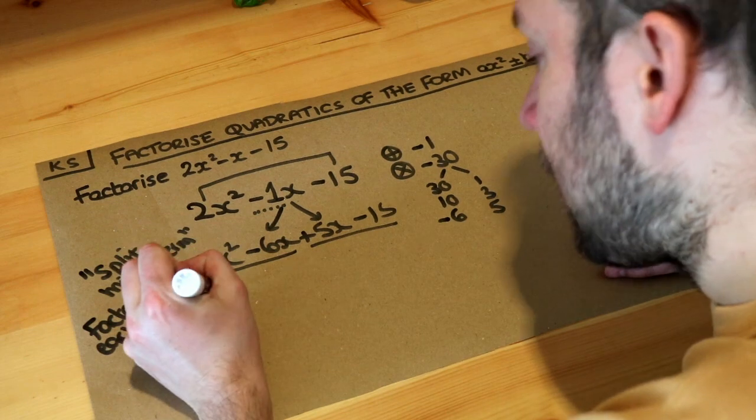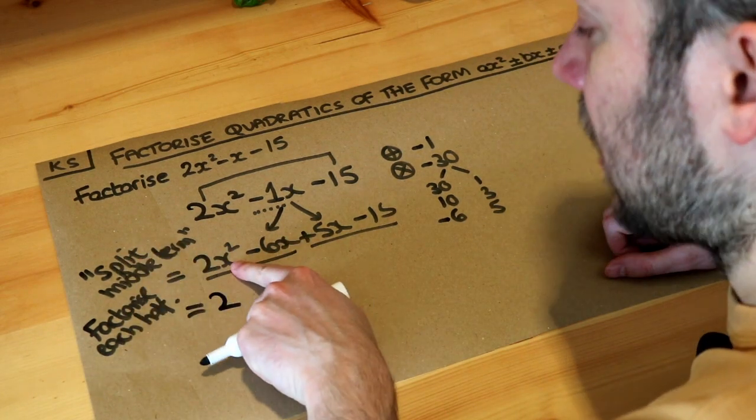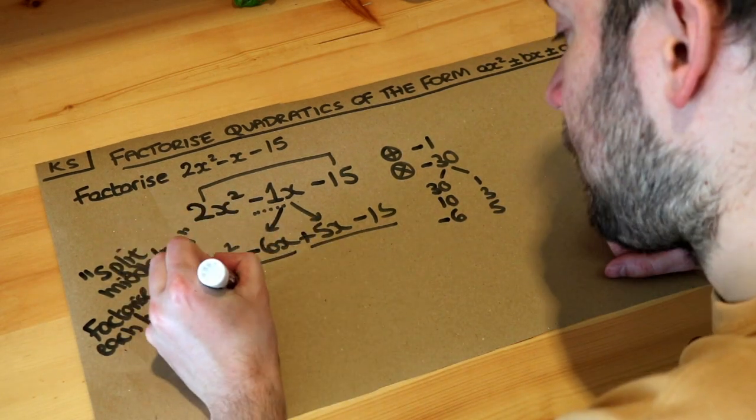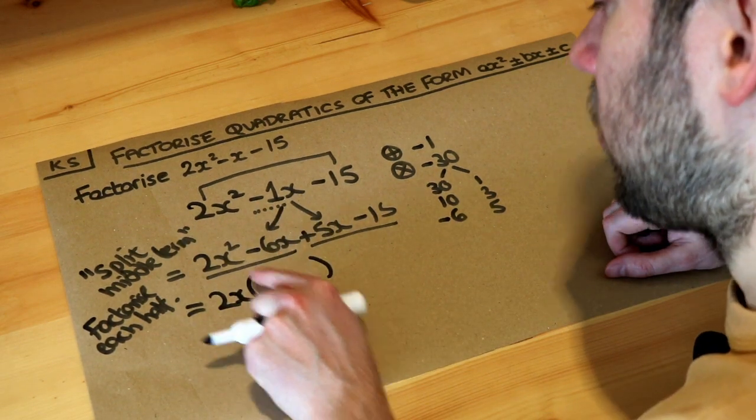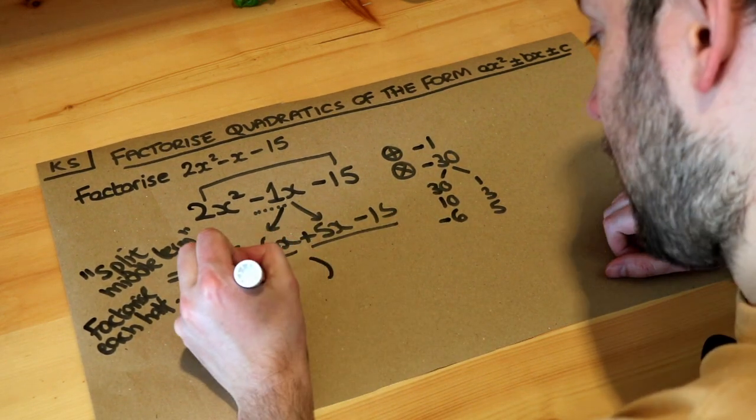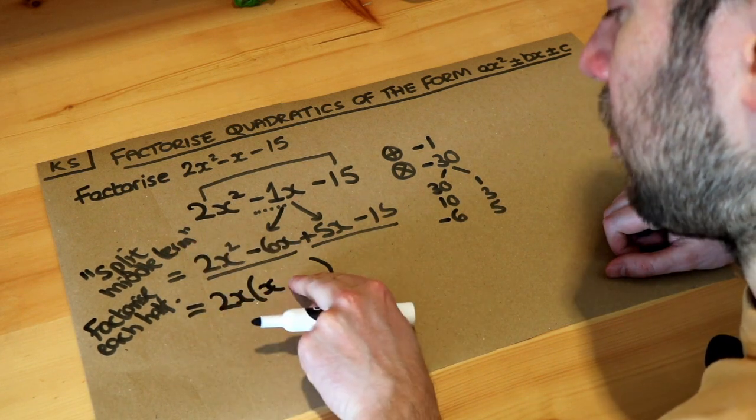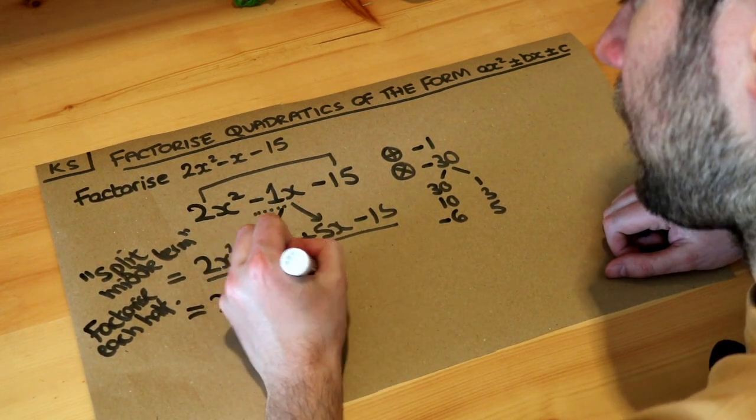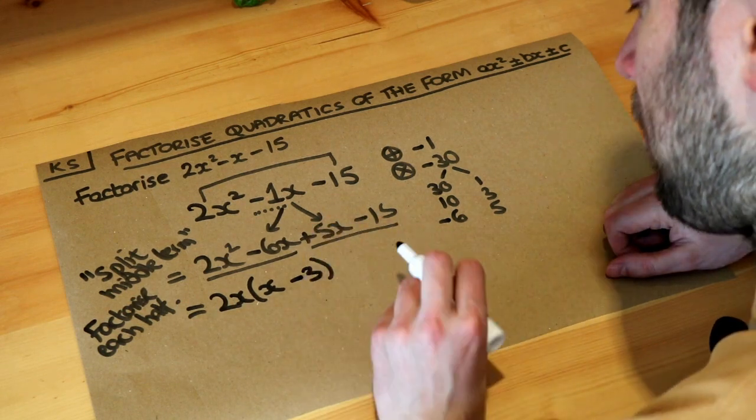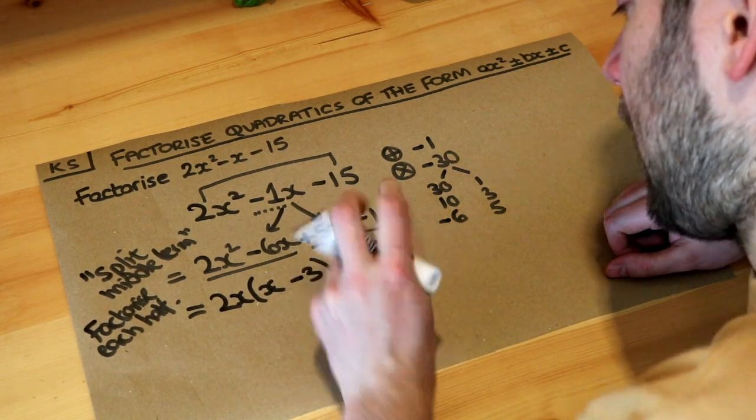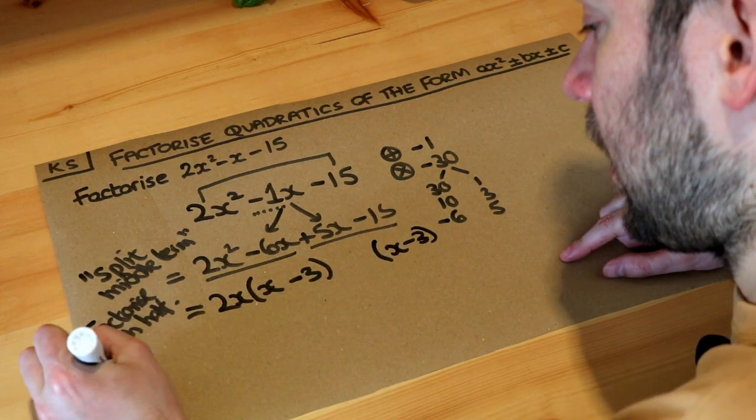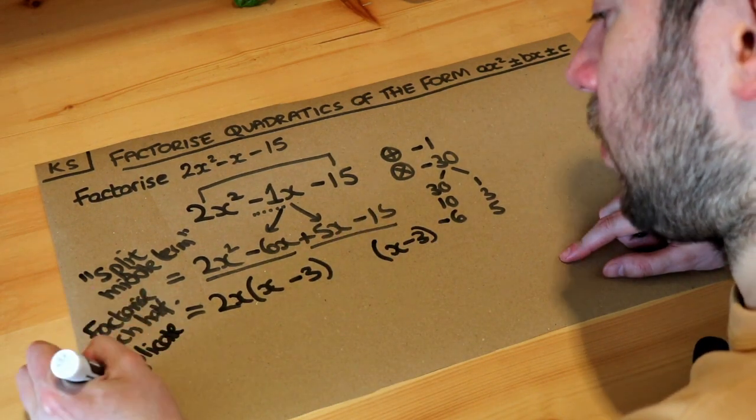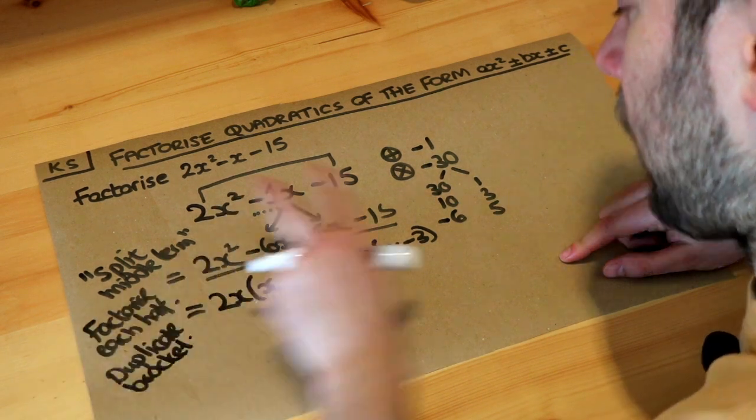What's common to 2x squared and minus 6x? Well, 2 is a common factor of 2 and 6. We can take the 2 out. And what's common to x squared and x? Well, just x. And then we put a bracket. And then think 2x times what is 2x squared? Well, it's x. And 2x times what is minus 6x? Well, it's minus 3. And then remember, we leave a space and we repeat that bracket. We duplicate the bracket.